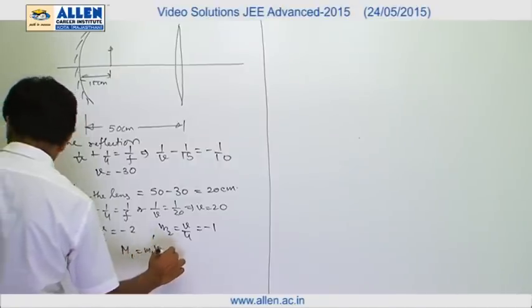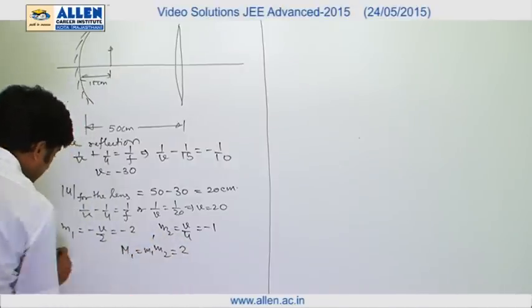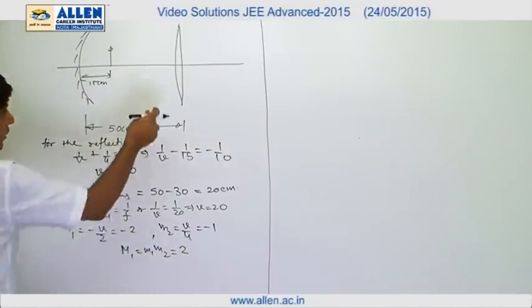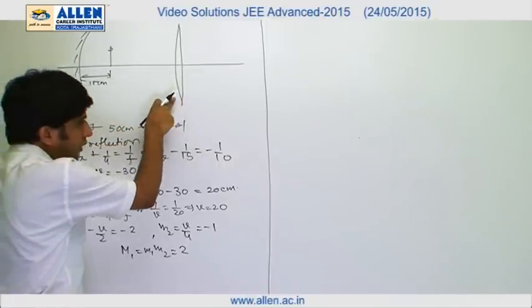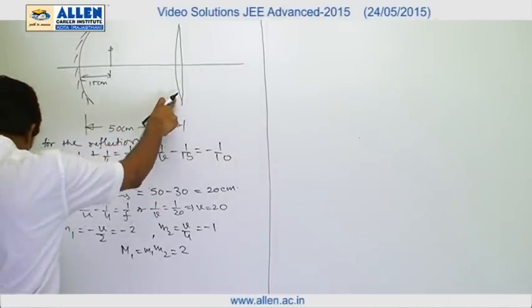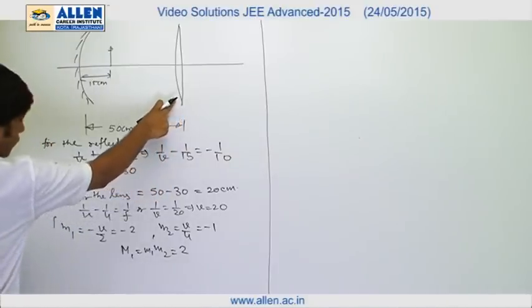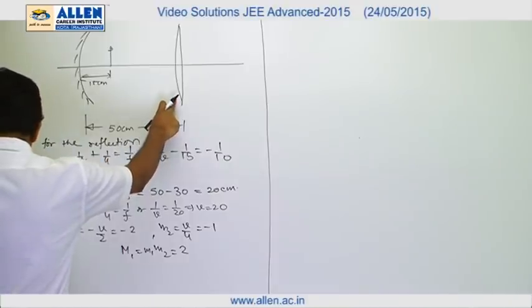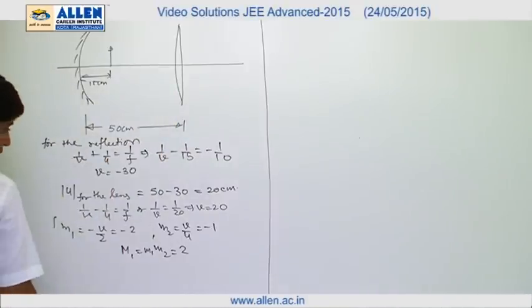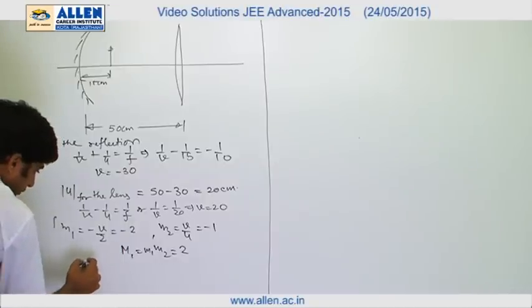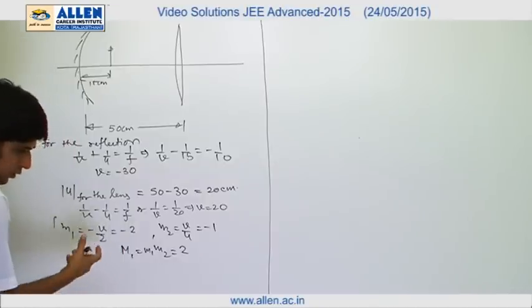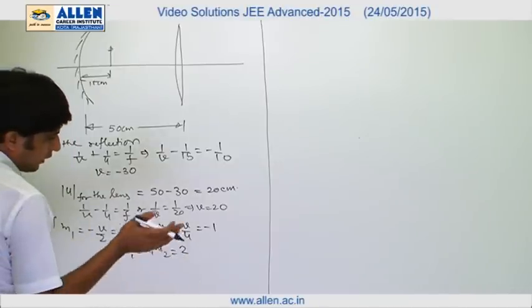Now it is said that the lens is submerged in a liquid of refractive index 7 by 6. First of all, we calculate the new focal length of the lens by applying the lens formula. First we apply the lens formula in air, then we will apply the same formula in the medium.